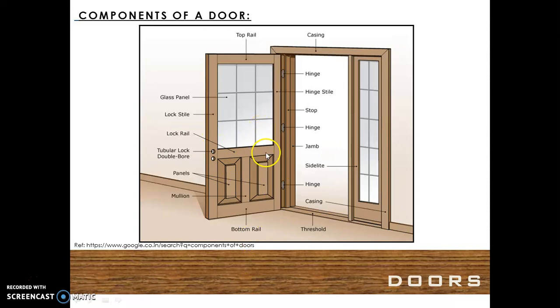The door shutter is hinged with the help of hinges to the door frame, the hinge style, the jam of the door frame and the casing, and the threshold.